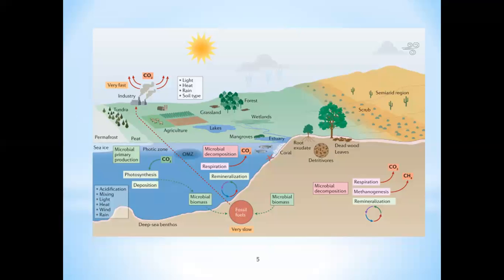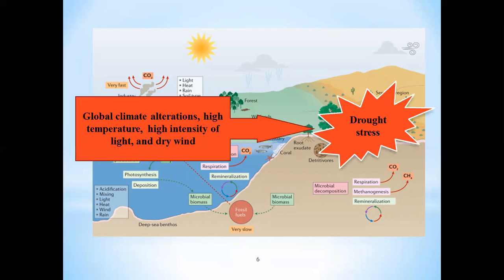Today, alterations in rainfall patterns in many regions occur due to global climate change that are leading to increasing temperature and atmospheric carbon dioxide levels. So global climate alterations are the main factor triggering drought stress worldwide. However, there are many other reasons for drought such as high temperature, high intensity of light and dry wind, all of which increase evaporation of water from soil and also increase water losses from plants and subsequently facilitate plant exposure to water stress.